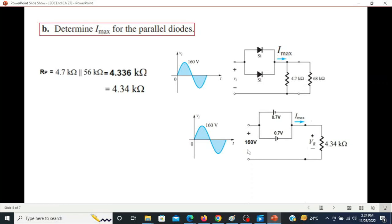VR from the circuit you can see will be 160 minus 0.7, so VR is equal to 159.3 volt. Now we can easily calculate the current through these resistors, which is I max equals V over R: 159.3 divided by 4.34 kilohms is 36.71 milliampere. So this is the correct answer.